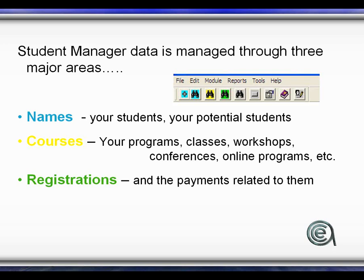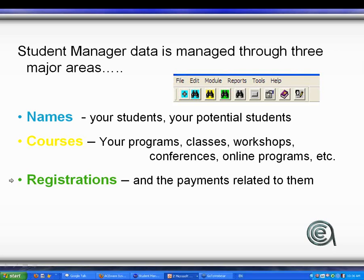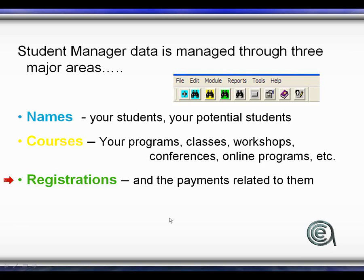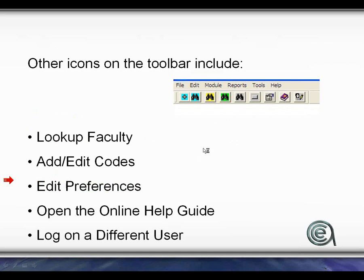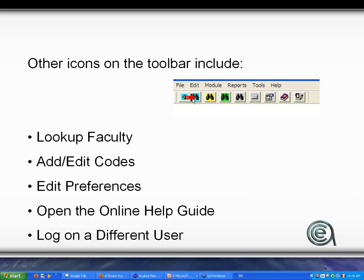For general operational benefit, Manager is really organized into three big things: the people (the names), the courses (the programs, the classes, the workshops you do), and then the registrations — which is a record of a person enrolling in a class. There are lots of other elements, but those are the big three. We call them the holy trinity. Looking at the toolbar, the colored icons address the different lookups for the various tables.